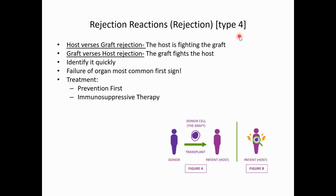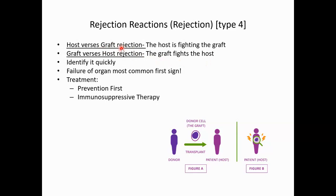These are type four hypersensitivities. There are basically two types of rejection: host versus graft rejection, and graft versus host rejection. The host is the person; the graft is the tissue or organ. Host versus graft — the person is fighting the organ — is the most common. Graft versus host is when the graft fights the host, and the best example is a bone marrow transplant, where the bone marrow recognizes the body as foreign.